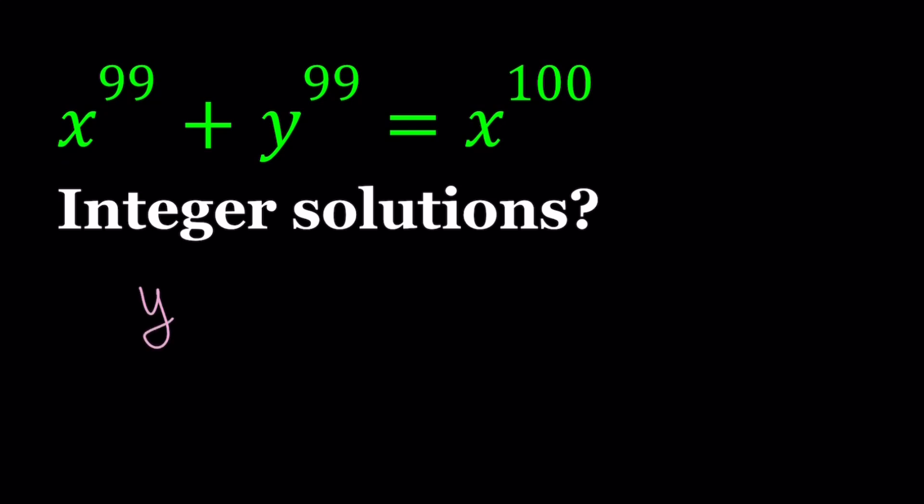So we have y to the power 99, and we can write it as x to the power 100 minus x to the power 99. Great. So that's the first step. I want to isolate the y so that the variables are separated. And then I want to do factoring on the right-hand side.